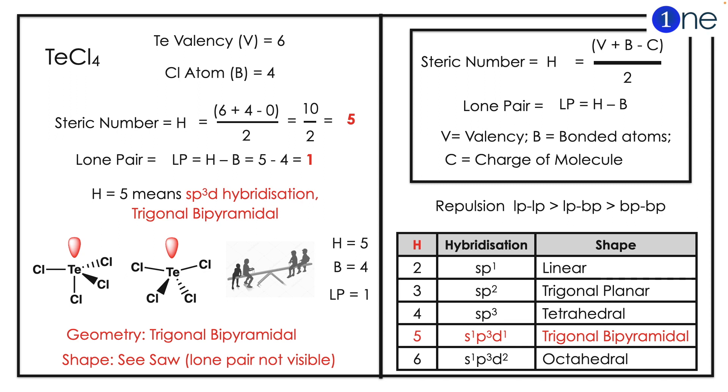This gives 5, and the lone pair will be 5 minus 4, which equals 1. So H equals 5 means sp3d hybridization, which is trigonal bipyramidal. With one lone pair, the structure will be seesaw because the lone pair is not visible. So the shape of tellurium tetrachloride is a seesaw structure.